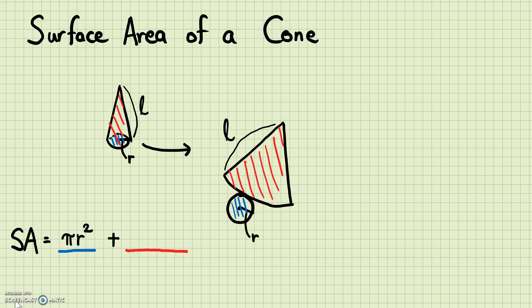Our only problem is the area of this pizza piece — how do we get the area of this pizza piece? Well, if you imagine a pizza that this piece is part of, this pizza piece is actually a part of a bigger pizza, so it is part of a circle. We'll need to use proportion: if we know what fractional part this pizza piece is of the whole circle, then we can find that same fractional part of the whole circle area to get the area of that pizza piece.